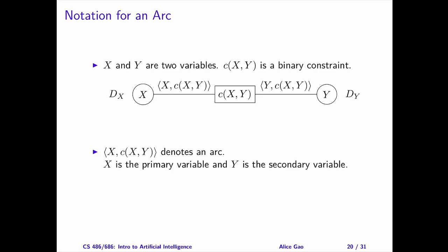Each constraint has two arcs associated with it. Take a look at the picture. Let's look at the left arc angle bracket x, c(x,y) angle bracket. The arc is denoted by a tuple in angle brackets. The second element in the tuple is a constraint. The first element in the tuple is the primary variable in the constraint. The primary variable tells us which arc we're looking at. For our example, if the primary variable is x, we're looking at the arc on the left. If the primary variable is y, we're looking at the arc on the right.